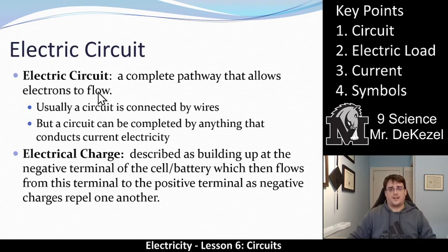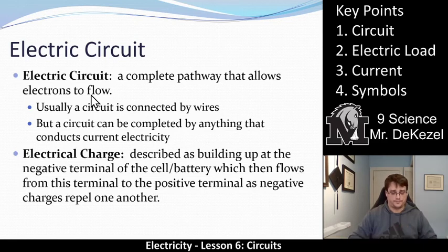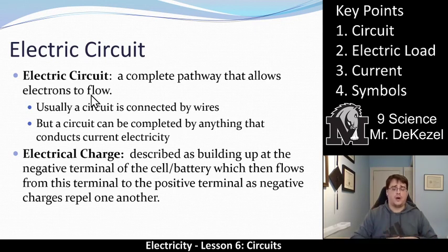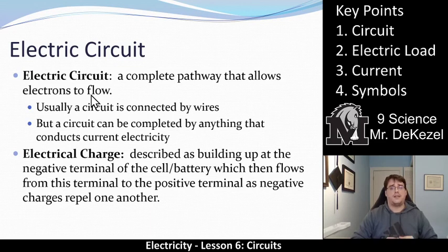An electric circuit is a complete pathway that allows electrons to flow. Usually a circuit is connected by wires, but it can be connected by anything that conducts electricity. We usually have wires throughout our walls to connect a circuit, or wires within our computers or our phones, wires within light bulbs and toasters and ovens to connect circuits. When I talk about an electric circuit, I'm probably just going to talk about wires.